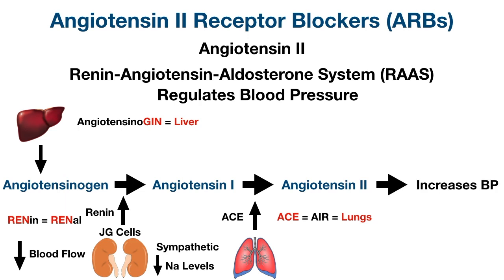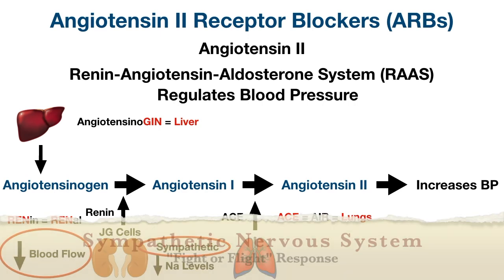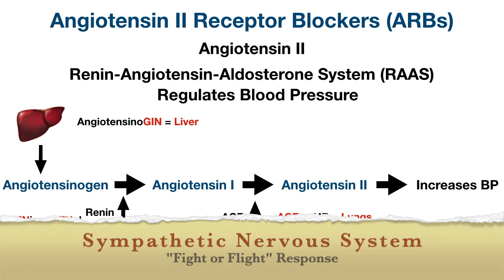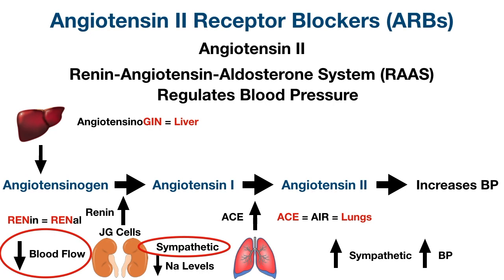Angiotensin 2 then has multiple effects on the body to increase blood pressure. Remember, the renin-angiotensin-aldosterone system is activated by decreased blood flow to the kidneys, so it makes sense that the goal of this system is to increase blood pressure in order to better perfuse the kidneys. The sympathetic nervous system can also activate JG cells to release renin, since the sympathetic nervous system generates our fight or flight response, which includes increasing blood pressure to better perfuse vital tissues.